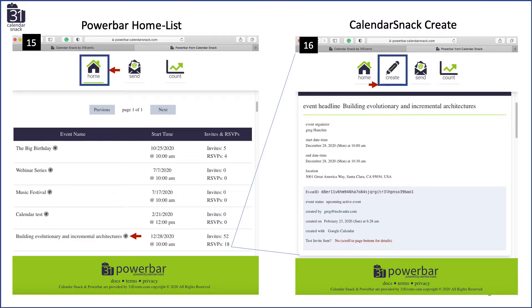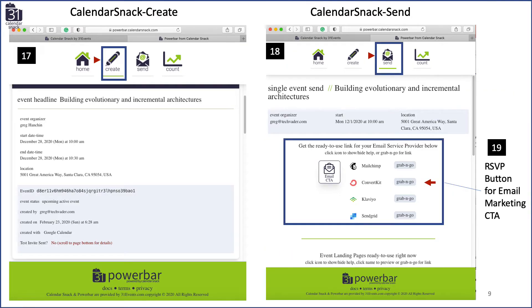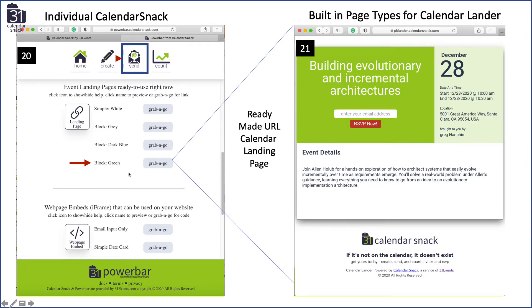So this is the PowerBar home — I'm back at the home and taking you through what it looks like in list version. The toggle switch at the top lets you go into list version, and when you drill into a particular snack, you'll see it shown in detail form at the Calendar Snack create level. This is the PowerBar interface here and the Calendar Snack interface over here — the same workflow. Calendar Snack send is up here to grab your grab-and-go RSVP buttons for MailChimp, ConvertKit, Klaviyo, or SendGrid, and then the individual Calendar Snack grab-and-go buttons for landing pages and web page embeds. You can see this one's green — I copied and pasted it, it's right here nice and clean.